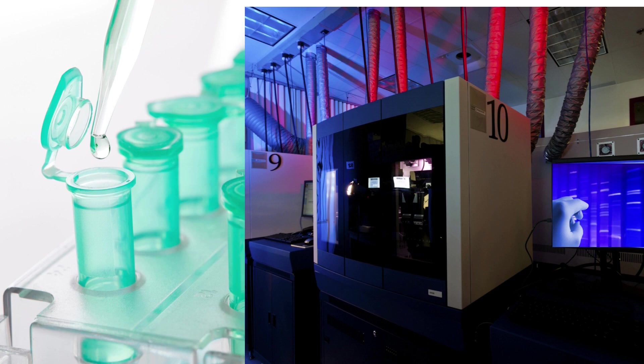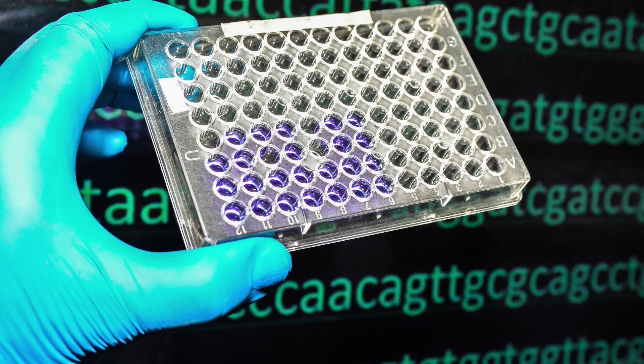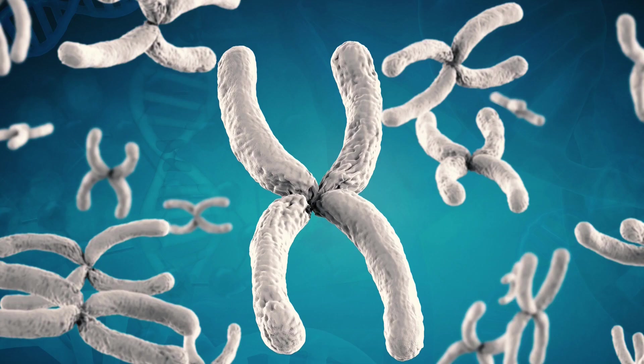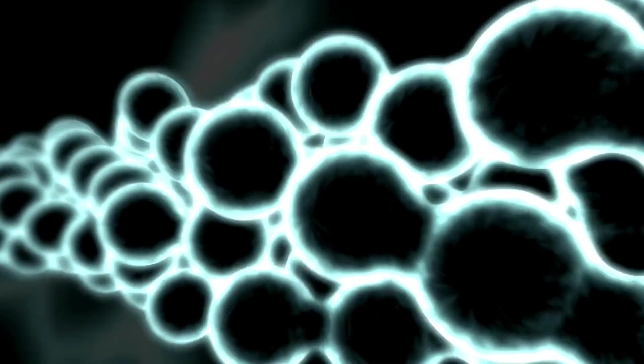CRISPResso 2 is a bioinformatics tool that helps scientists analyze the outcomes of CRISPR gene editing experiments. It provides detailed information about the efficiency of gene editing, the types of mutations that occur, and the proportion of cells that are edited. Let's take a closer look at how CRISPResso 2 works.